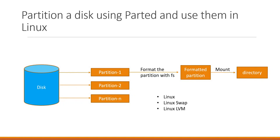In this video we will see how to partition a disk using the parted command and how to use the corresponding partitions in Linux. We have a disk in the diagram and we will create multiple partitions using parted command. We will consider three types of partitions: generic Linux partition, Linux swap partition, and Linux LVM partition. Once the partitions are created, we will format them and mount them on particular directories in the file system.